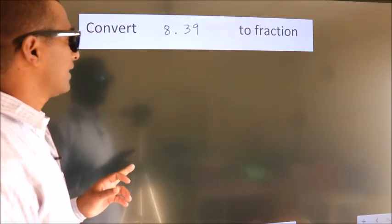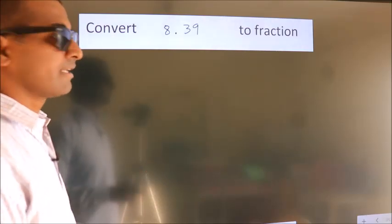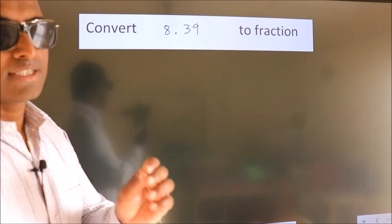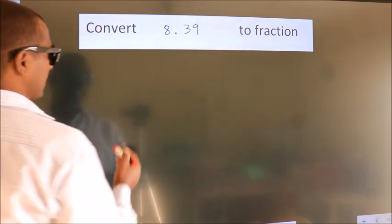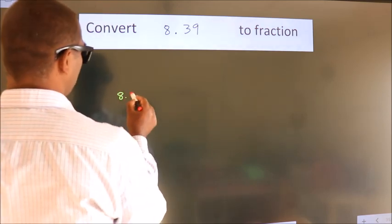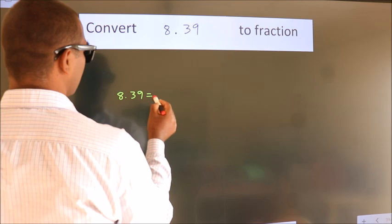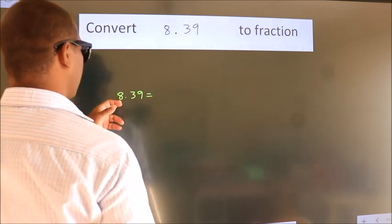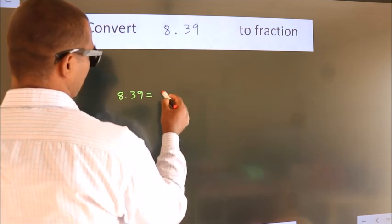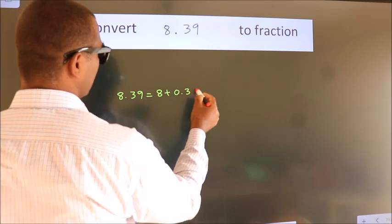Convert 8.39 to fraction. How do we convert this? Given is 8.39, first we should break this into 8 plus 0.39.